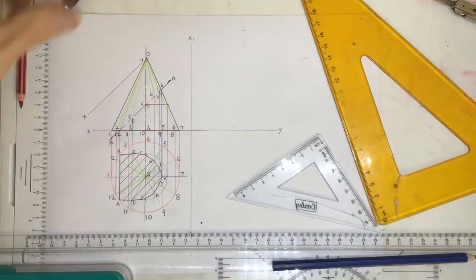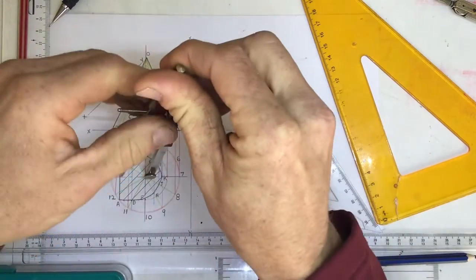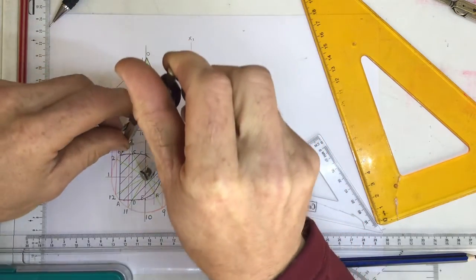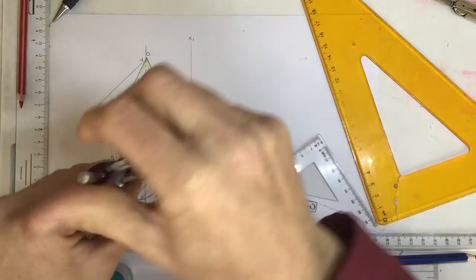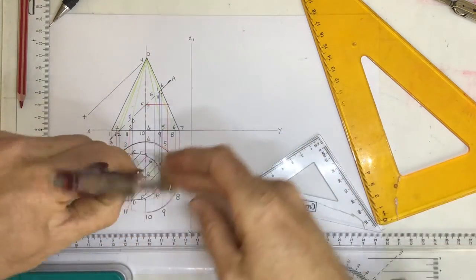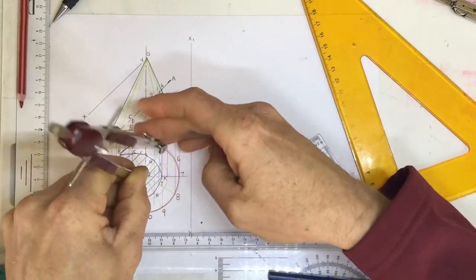Once I've done that, I can then take my pair of compasses and I can darken in this construction line circle that I drew at the beginning. Make that nice and dark, coming around. There it is. Do that nice and dark, coming around there.